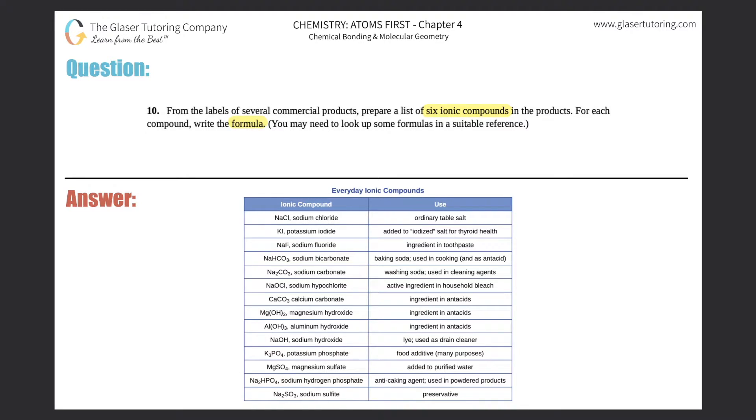So you could go around your house and pick up commercial products, look at the ingredients, and see if you can spot any ionic compounds. Remember that an ionic compound technically should have two things: it should have a metal name in front with a non-metal name at the end.